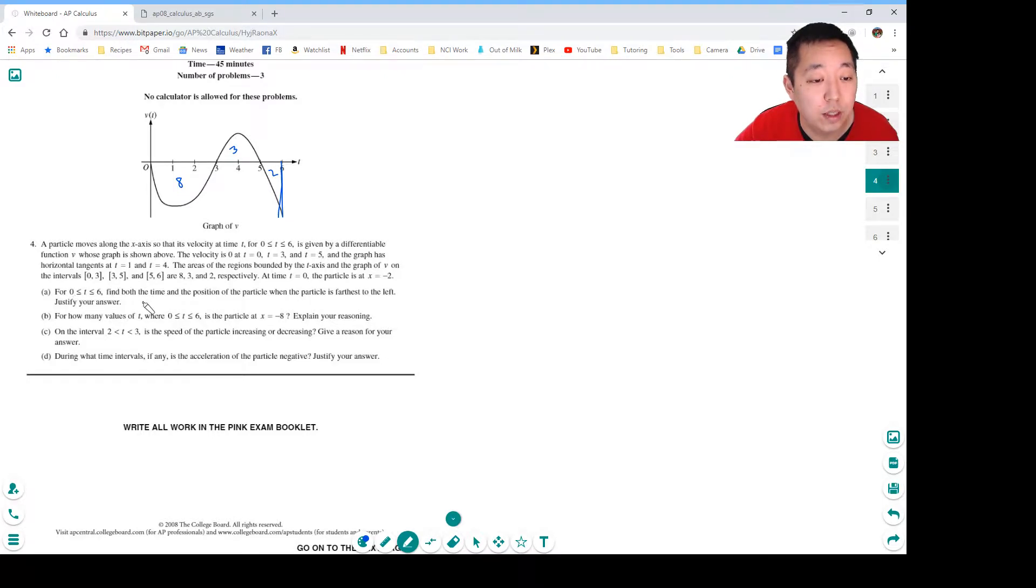For 0 to 6 find the time and position of the particle when the particle is furthest to the left. Its position is given by the integral, right? So when you integrate from a to b of v(t) dt, that equals x(b) minus x(a).